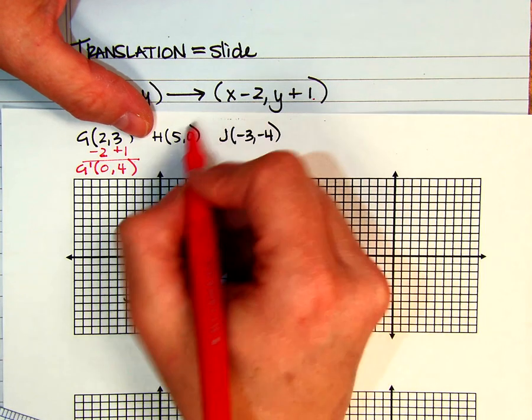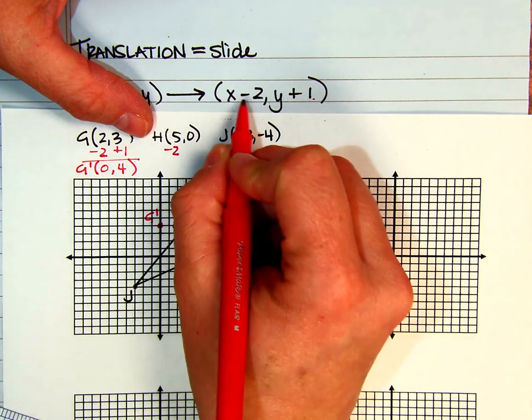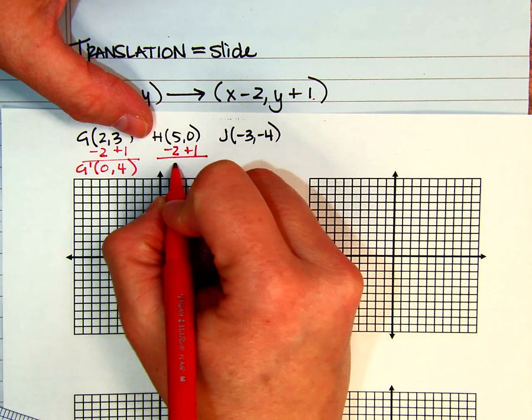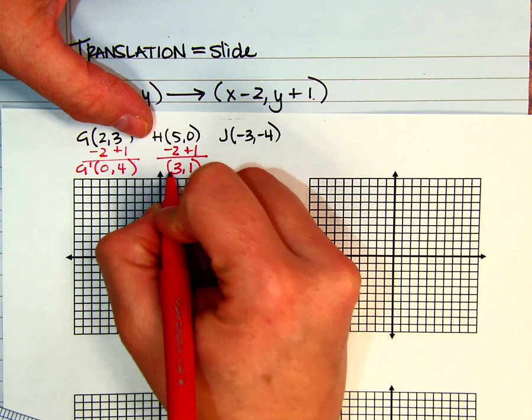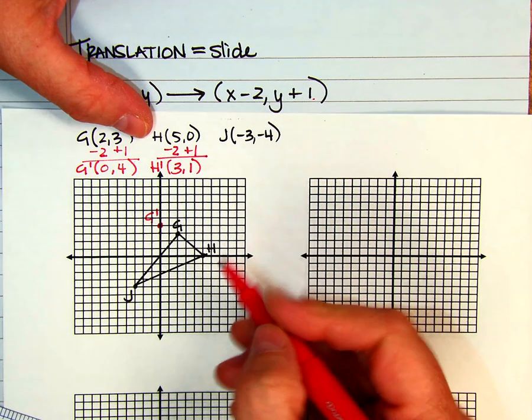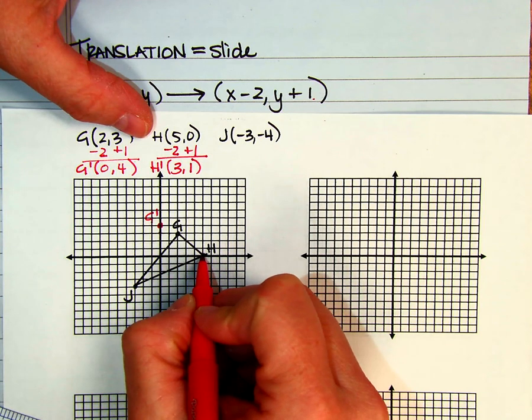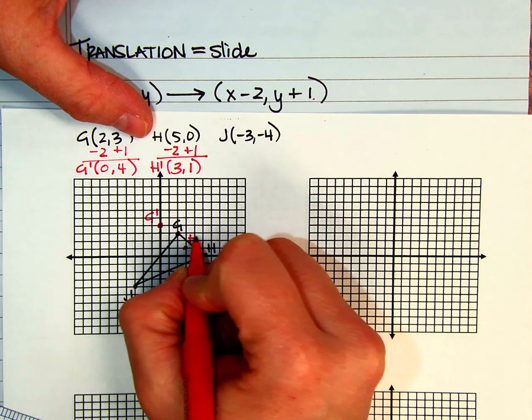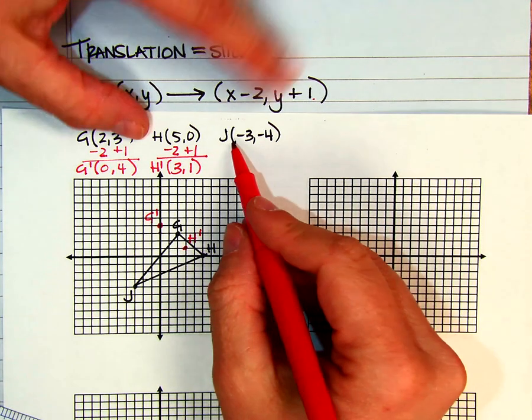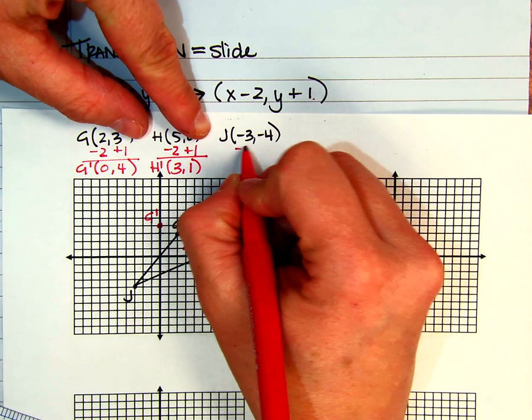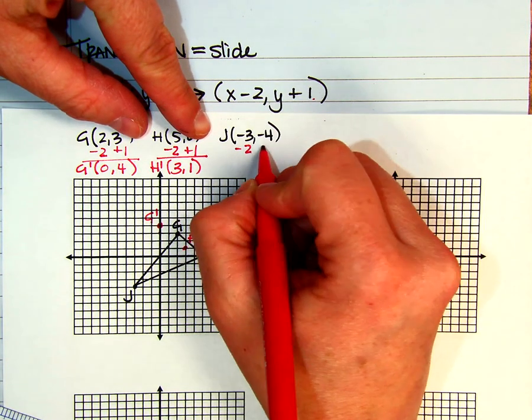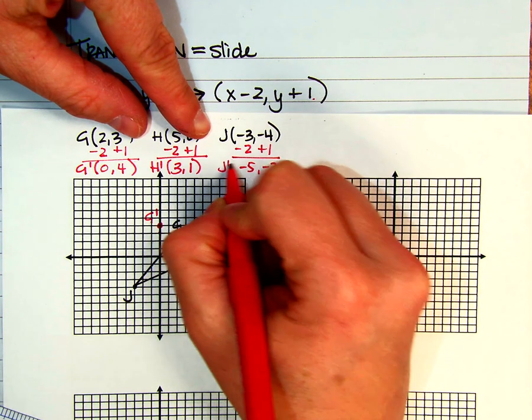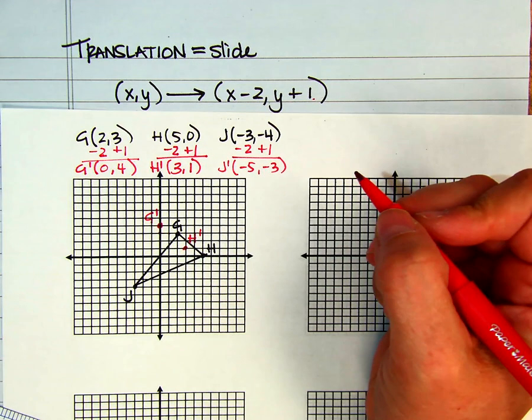So if I have 5, I'm going to go to the left 2, and I'm going to add 1. It gives me the order pair of (3,1), and that would be H prime. So if I went to the left 2 and up 1, that would be H prime. And do the same thing with J, and do minus 2 and a plus 1. It gives me (-5,-3). And that would be my coordinates for J prime.